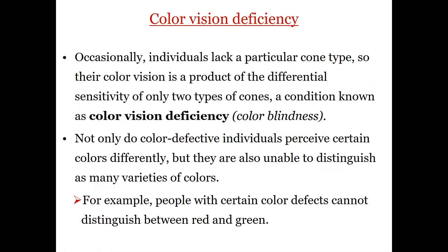Color vision deficiency occurs when there is a loss or defect. When there is a complete loss, the term used is anopia; when there is weakness, it is called anomaly. The most common type of color blindness is red-green color blindness.